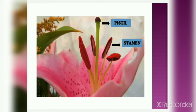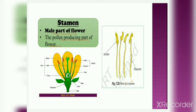As I told you, pistil is the female reproductive part of flower and stamen is the male reproductive part of flower. You can see in the picture clearly pistil and stamen. Let's study about stamen first. Stamen is the male part of flower and the pollen producing part of flower. You can see in figure 7.23 the stamen and its two parts: anther and filament. The upper part is anther and the lower part is filament.